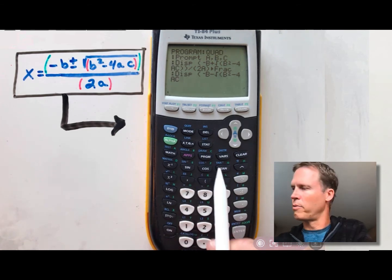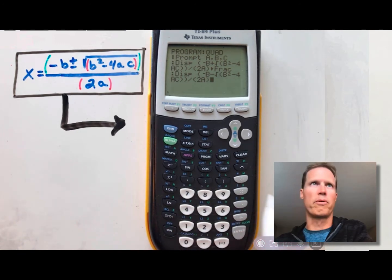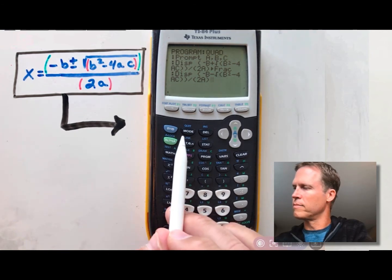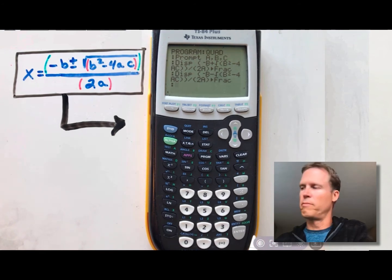Okay, close the parentheses twice. Divide by the parentheses 2 alpha A. Close the parentheses. And then we want to change it into a fraction if we can. Then just press math, enter, enter. And now you've got the program completed.